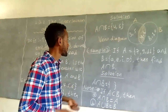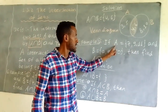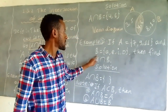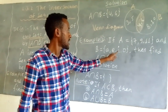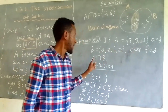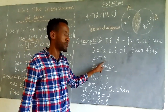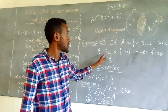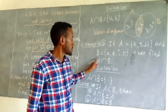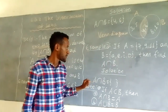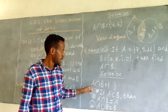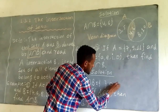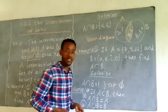Example 2: if set A is {9} and set B is {A, E, I, O}, then find A intersection B. A intersection B is empty, or we can write it as the empty set.